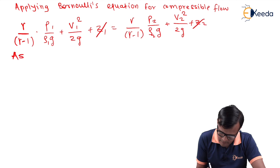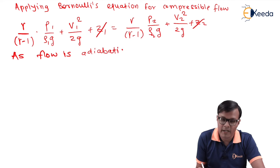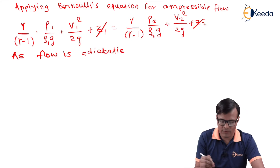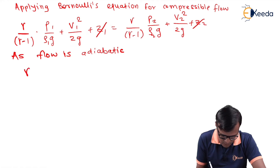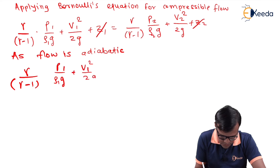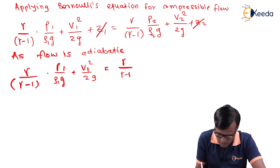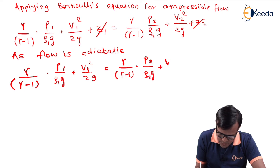Since flow is adiabatic, we use the adiabatic flow property. Rearranging the equation after cancelling the datum head terms: γ/(γ−1) · p1/(ρ1·g) + v1²/(2g) = γ/(γ−1) · p2/(ρ2·g) + v2²/(2g).